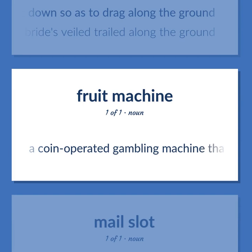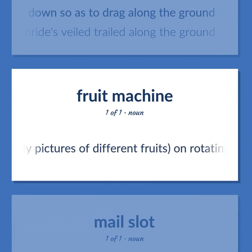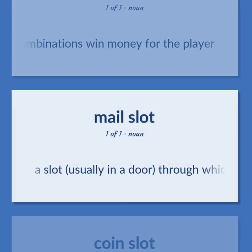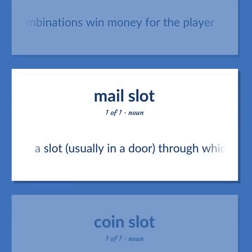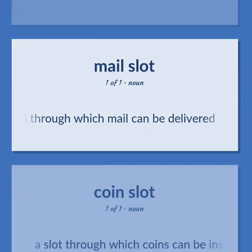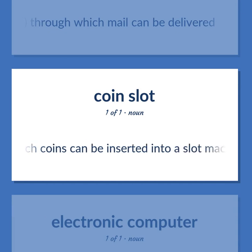Slot machine: A coin-operated gambling machine that produces random combinations of symbols — usually pictures of different fruits — on rotating dials. Certain combinations win money for the player. Mail slot: A slot, usually in a door, through which mail can be delivered. Coin slot: A slot through which coins can be inserted into a slot machine.